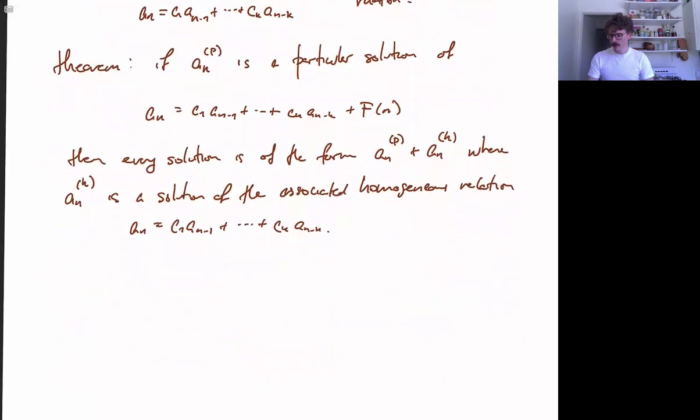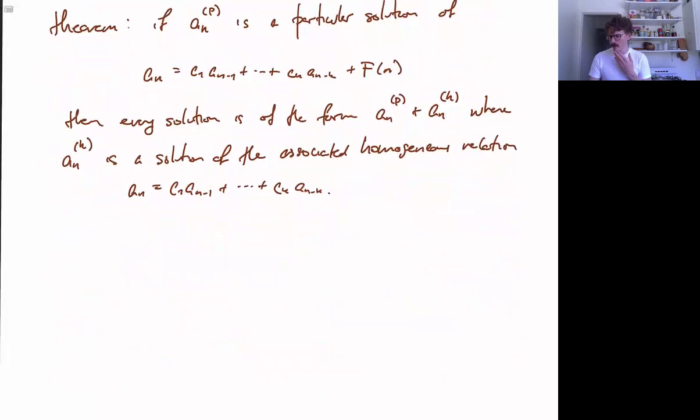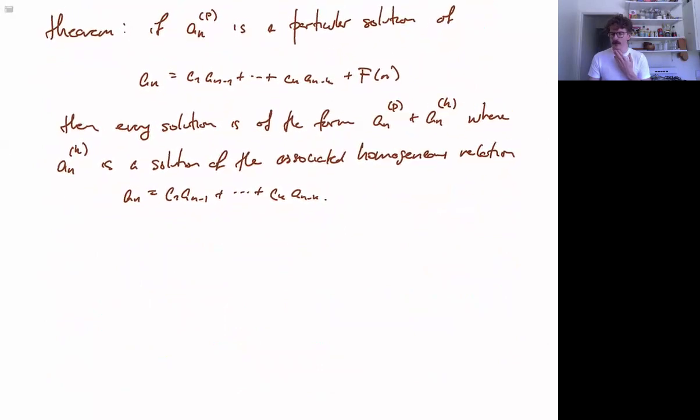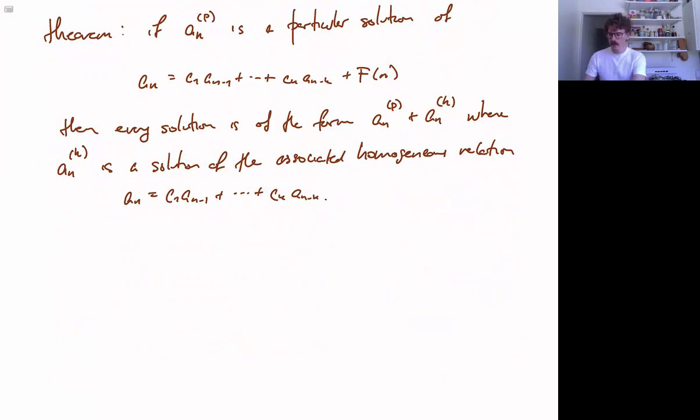The bad news is that finding a particular solution in general is quite tricky. So we will limit ourselves to a couple of cases where there is a good way to do it. Namely, how to find a particular solution. We can do this by taking an educated guess. Which, by which we essentially mean that in a couple of different situations we know the form that the solution should take, and we'll just have to figure out what the precise details are.